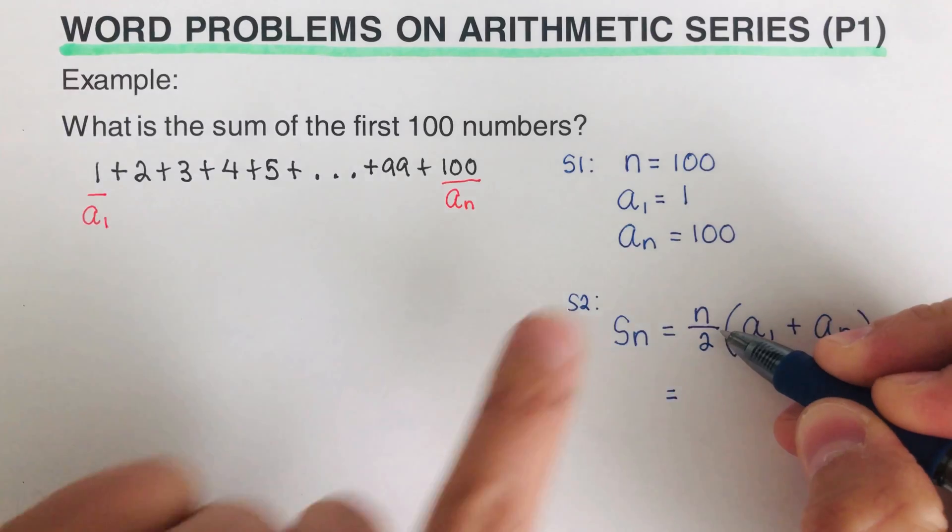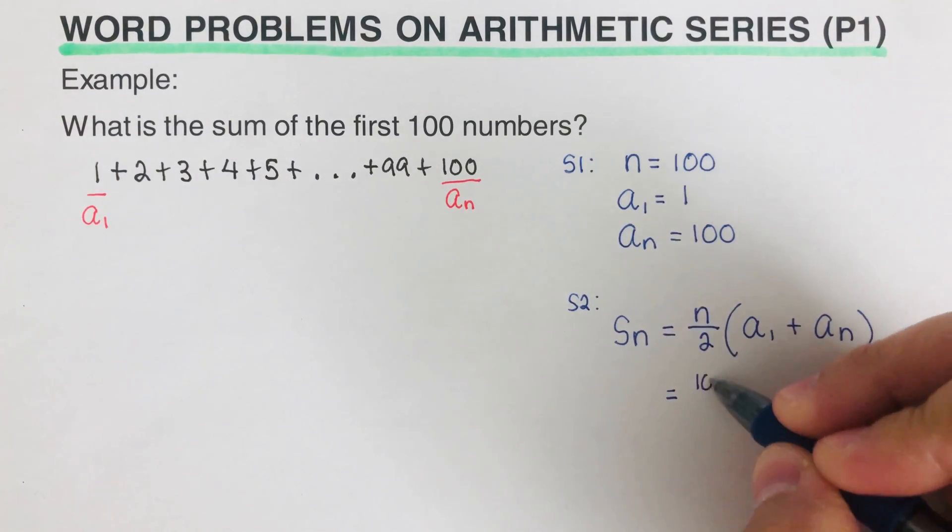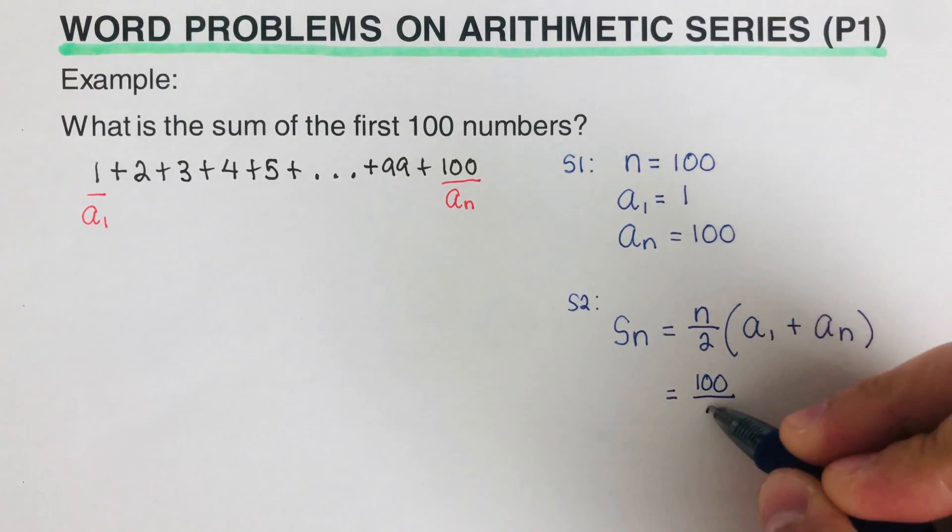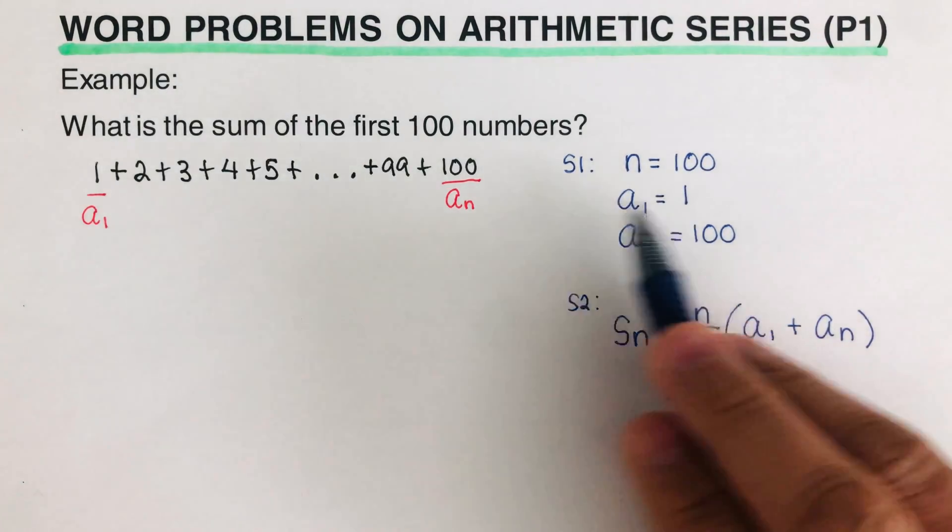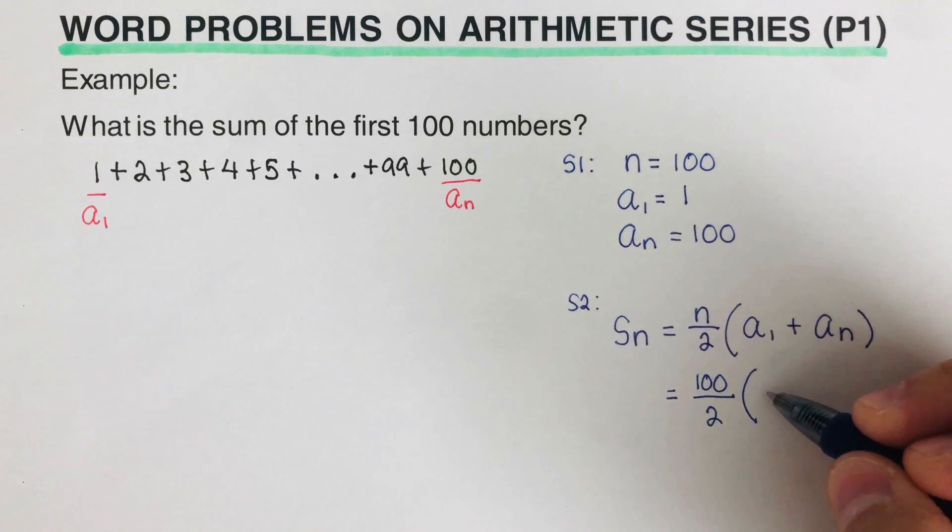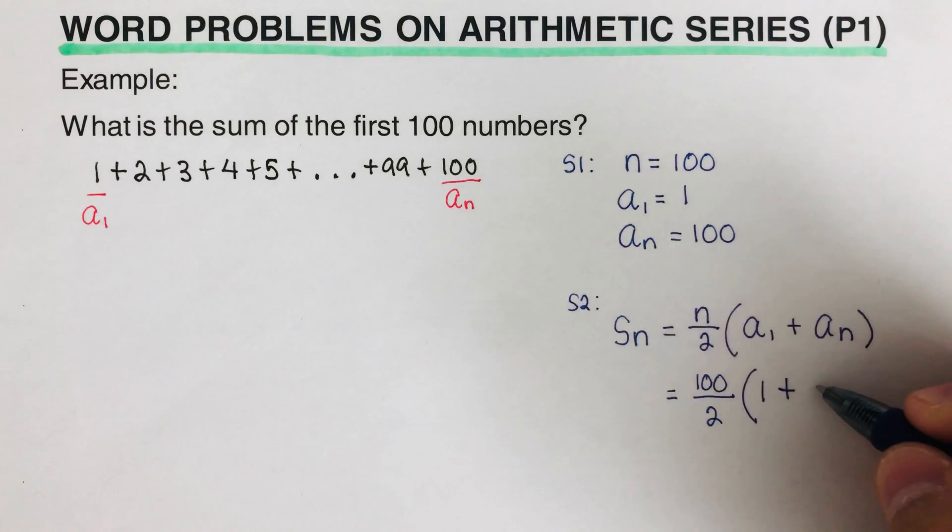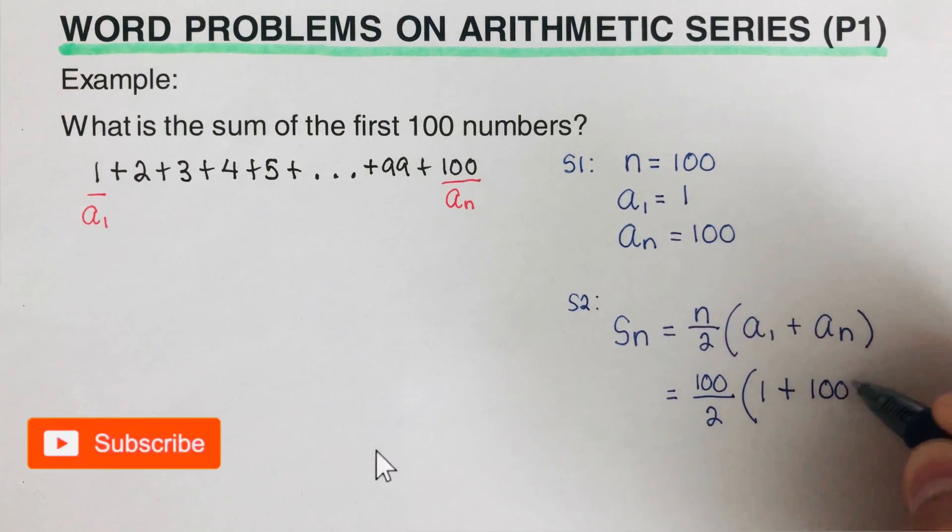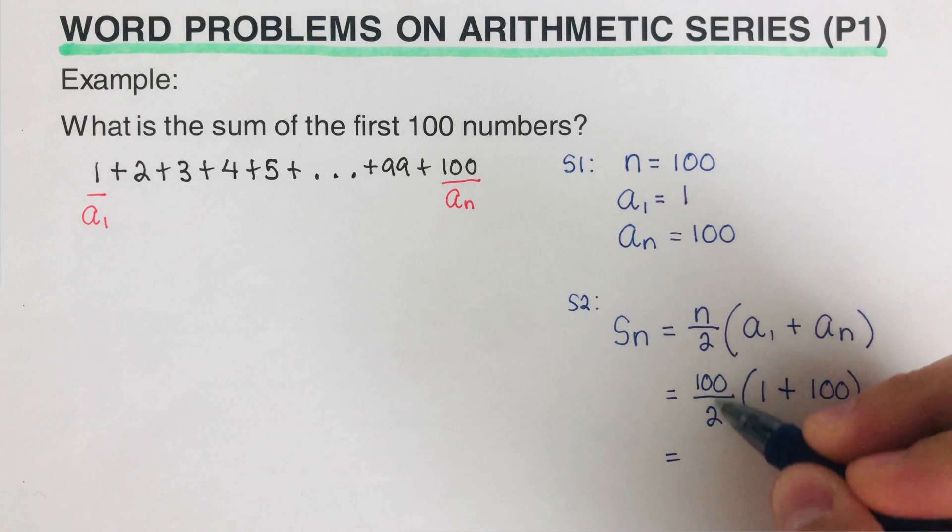So this would be—our n again is 100, so we have written that up there. So that is 100 over 2, and that's going to be multiplied by a sub 1, which is 1, which is the first term. So our a sub 1 is 1, plus our a sub n, which is the last term, is 100. So that would be 100 right here.